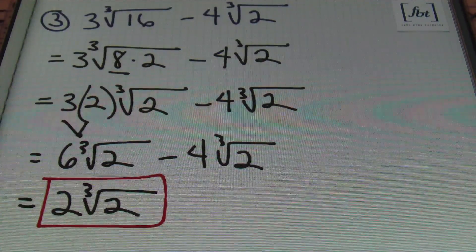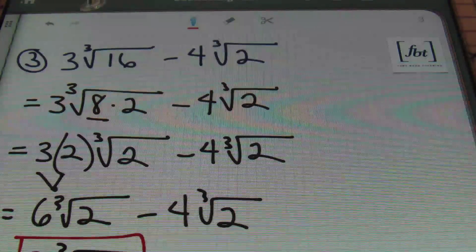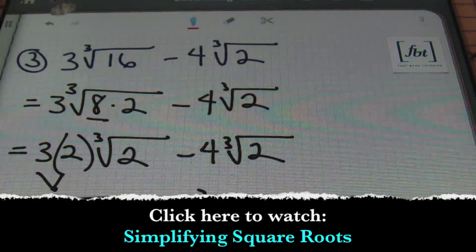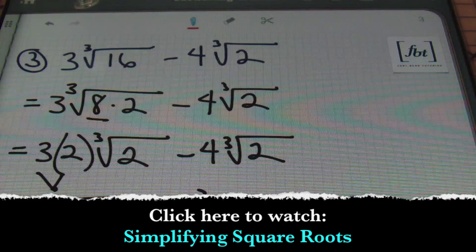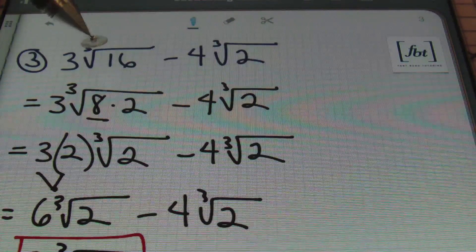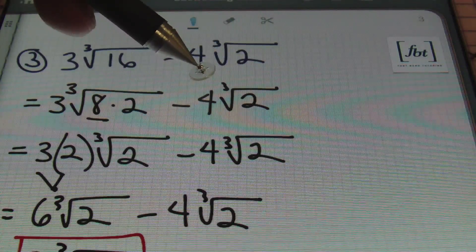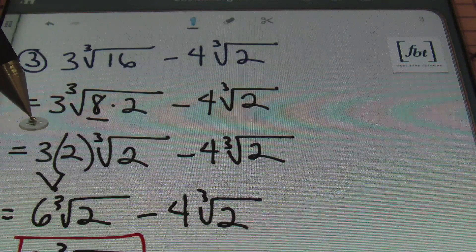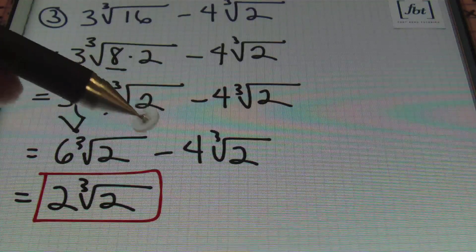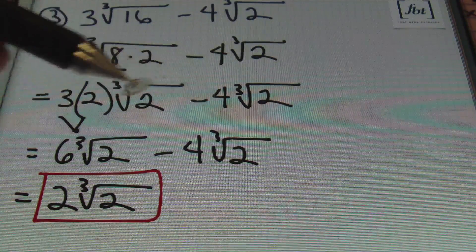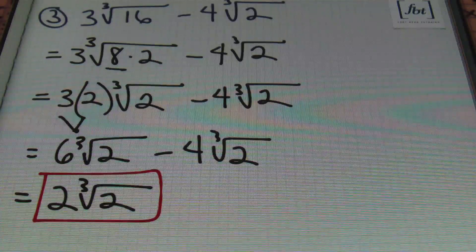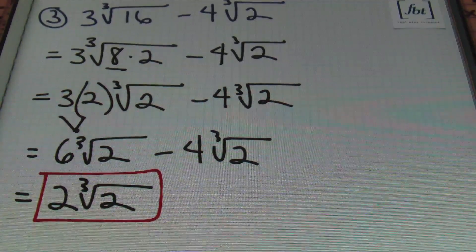In this problem, we started by simplifying our radicals first. We've posted a video for simplifying square roots and working with different radicals — check that out; I'll put a link below. We broke down 16 into 8 times 2. The cube root of 8 is 2, which multiplies by the coefficient of 3 to give 6. Then 6 times the cube root of 2 minus 4 times the cube root of 2 — since the radicals are identical, we subtract the coefficients: 6 minus 4 is 2, keeping the cube root of 2.